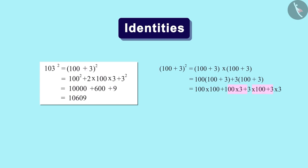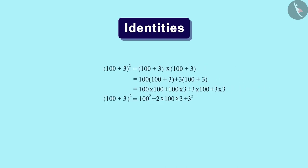Now observe that multiplying 100 by 3 and multiplying 3 by 100 is the same thing. So these two can be combined, which gives us 2 multiplied by 100 multiplied by 3. So this is how we got the previous expression.